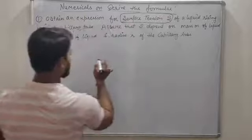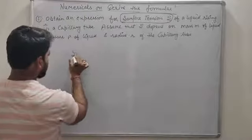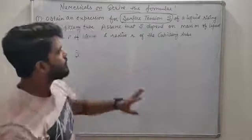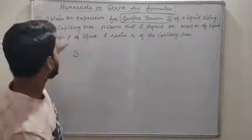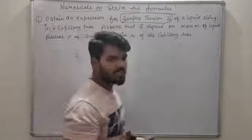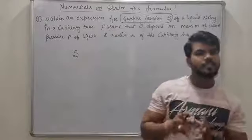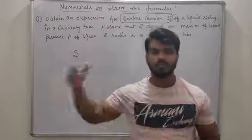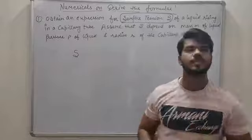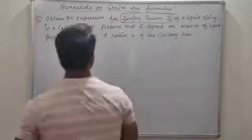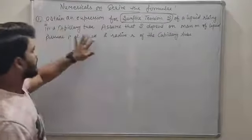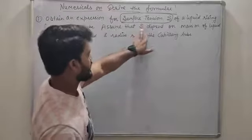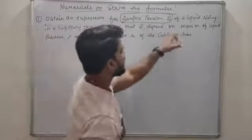For surface tension, you have to write S because S is the symbol used for it. Liquid is rising in a capillary tube — what is the surface tension? This is a physical quantity of liquid which you will learn in the seventh unit of Plus 1. Rising in a capillary tube — assume that S, i.e. surface tension, depends on...